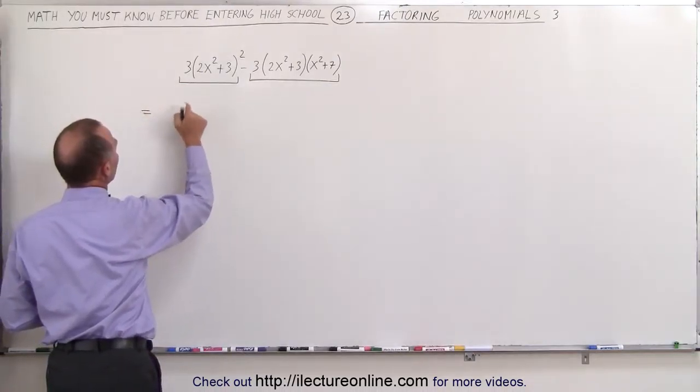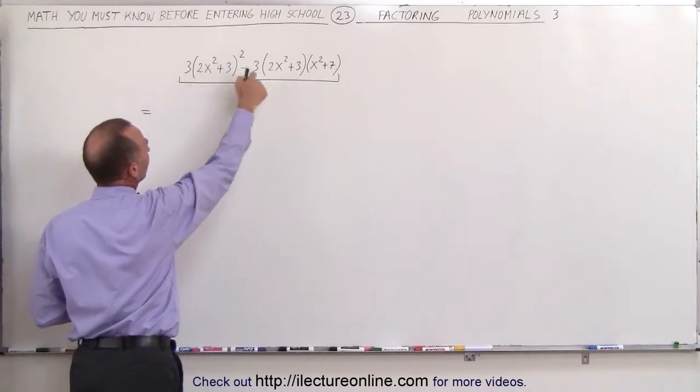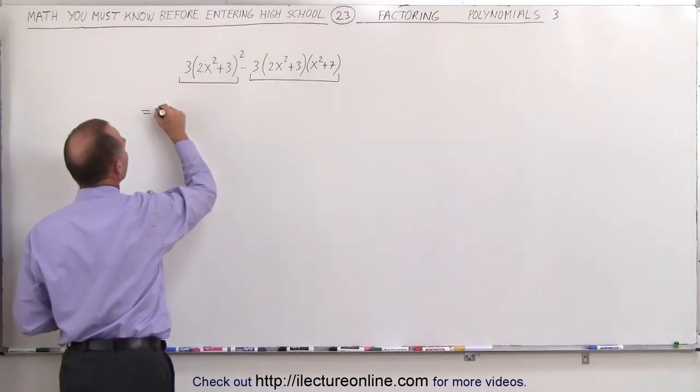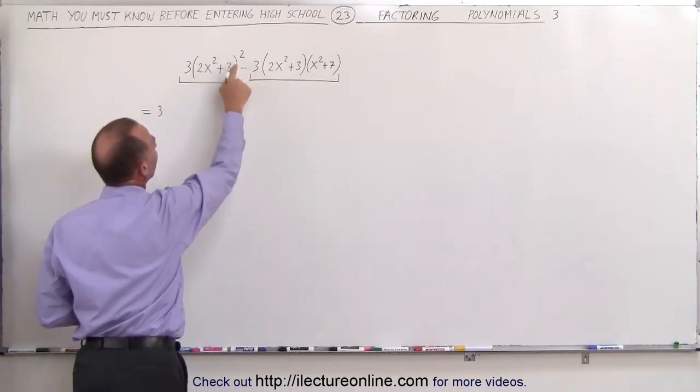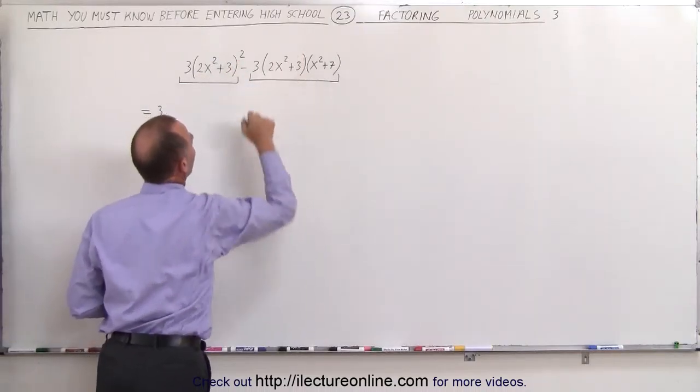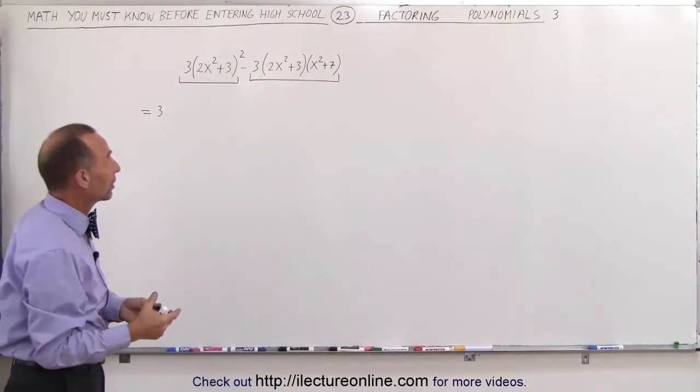Well, first of all, you can see that there's a 3 here and there's a 3 there, so we can factor out a 3. And then you realize that there's a 2x squared plus 3 squared and a 2x squared plus 3 to the first power, so we can take out at least the 2x squared plus 3.